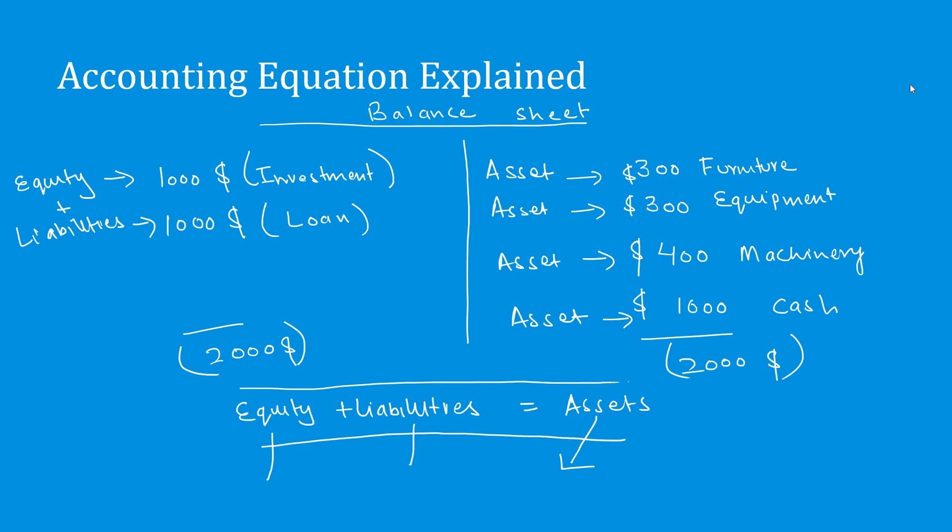I will further simplify this concept with the help of an example. Suppose we bought a car. A car is an asset to the business. Suppose we bought this car for $2,000. So it is an asset for the business for $2,000. How we bought this car? We have $1,500 for ourselves and $500 we took loan. So this is equity, our own money. Owners investment is called equity. And the $500 is loan.